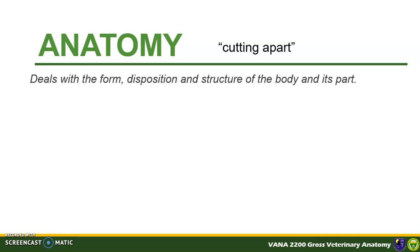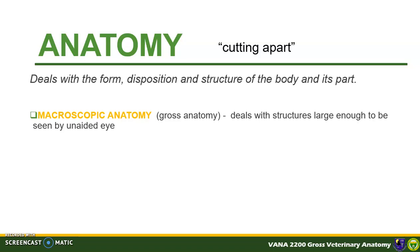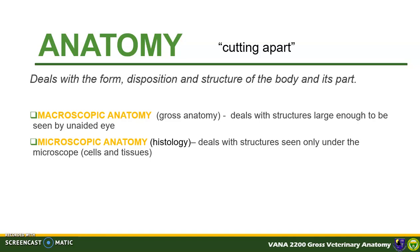Veterinary anatomy has the following sub-branches. Macroscopic anatomy, or gross anatomy, deals with structures large enough to be seen by an unaided eye. Microscopic anatomy, or histology, deals with structures seen only under the microscope, including the structure of the cells and tissues.